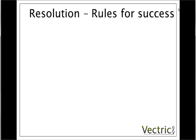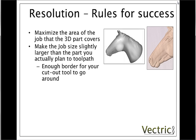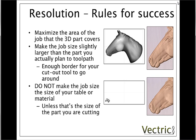A simple way to think of resolution is: the more points or pixels you have under your 3D part, the better quality it's going to be. So you want to maximise the area of the job that your 3D part covers. The best way to do this is to make your job setup area only slightly larger than the part you actually plan to machine — a good rule of thumb is to leave an additional inch or 25mm in metric around the outside. A common mistake to avoid is not to make your job size the size of your table or material unless the job is actually that size.